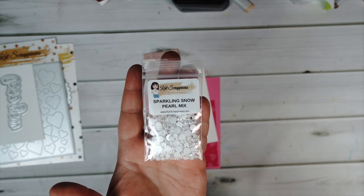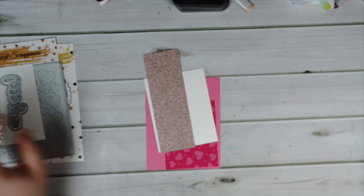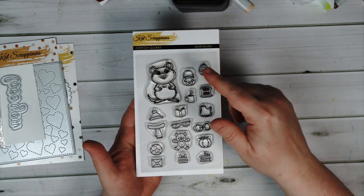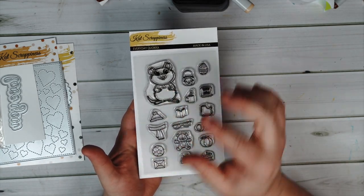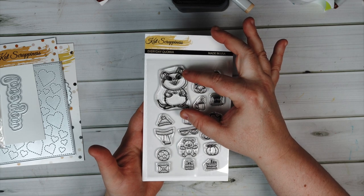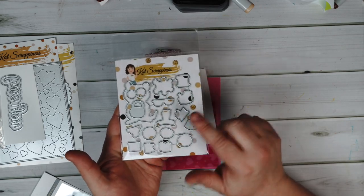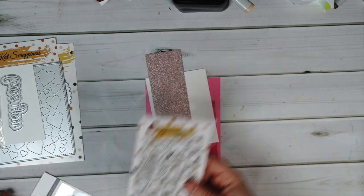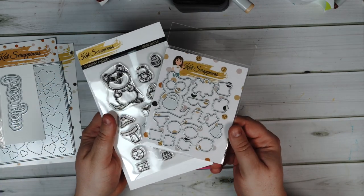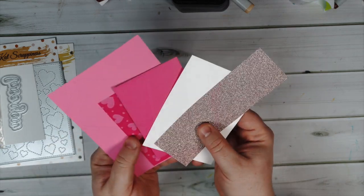I'll embellish with some of my favorite pearls, and this pearl mix is called sparkling snow. The stamp set I'll be using is Everyday Quokka stamp, and I'm also going to be using the coordinating dies which cut out everything perfectly. I just love the quokka sets.